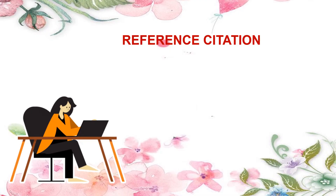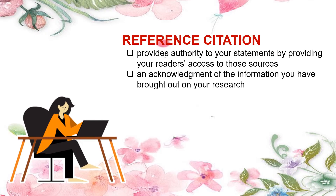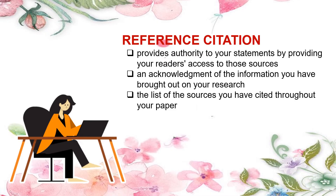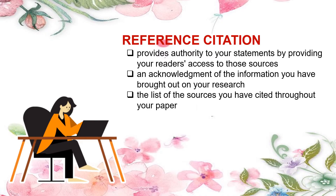After learning how in-text citation is done, let us move on to reference citation. This provides authority to your statements by giving your readers access to those sources. Likewise, it is an acknowledgement of the information you have brought into your research. In-text citations need to appear in the reference section of your paper — it is the list of sources you have cited throughout your paper. Since we used APA 6th edition in-text citation style, we also use APA 6th edition reference style. This is limited to reference citations in books, journals, online sources, theses and dissertations in single authorship, multiple authorship, without author, and date.